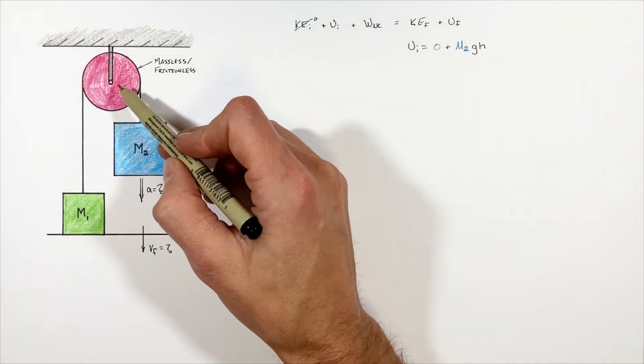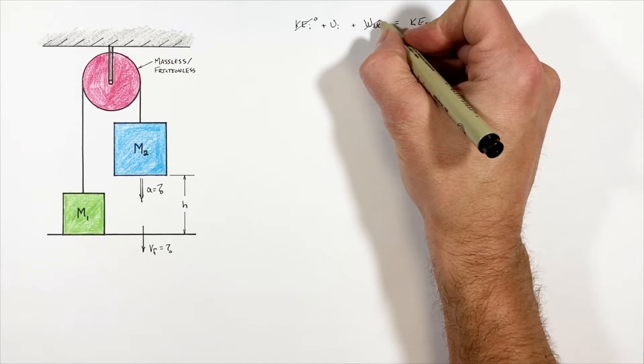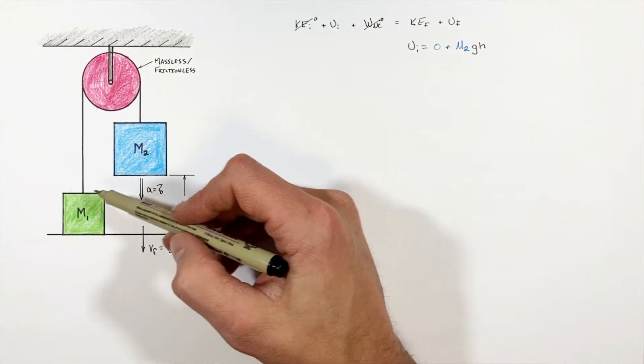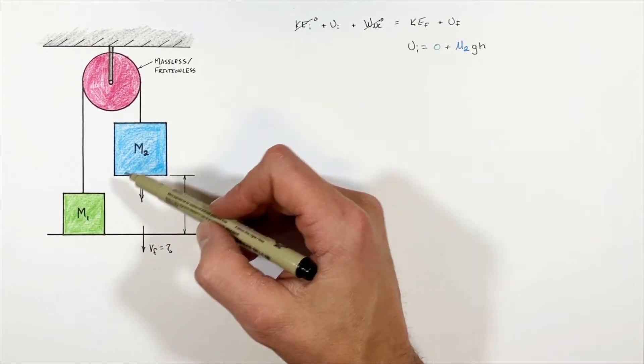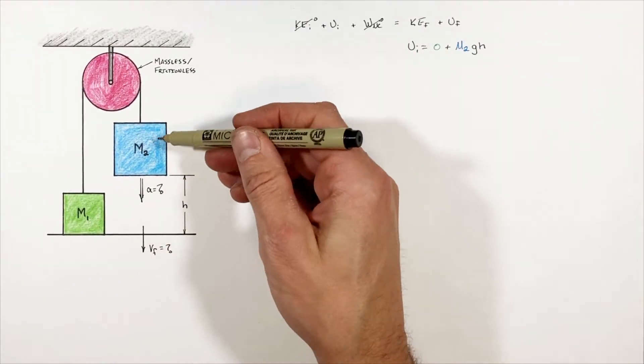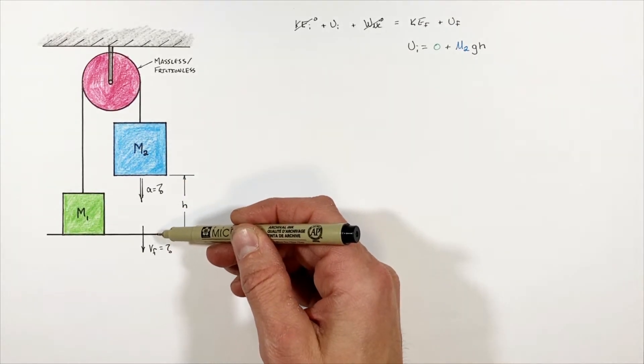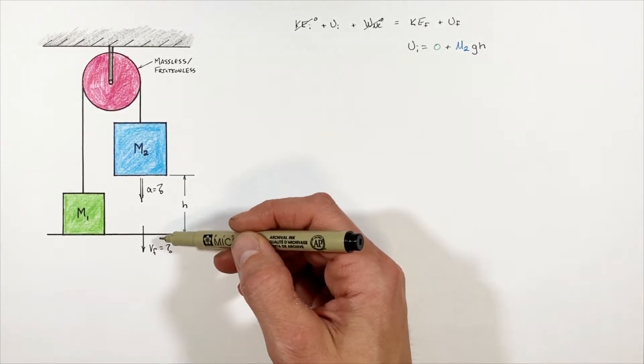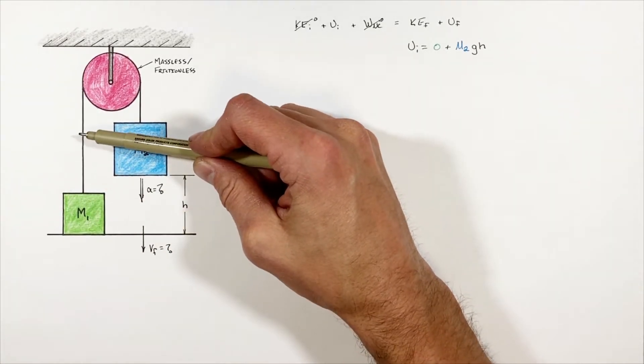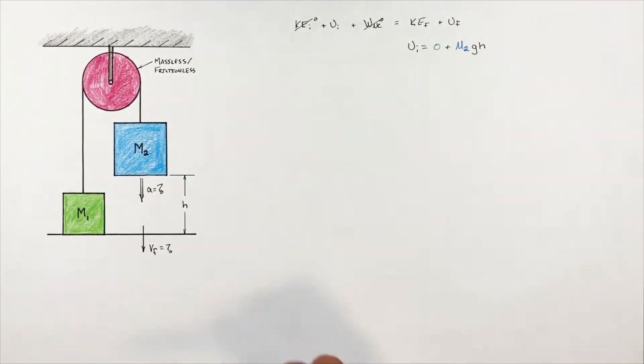Now because this pulley is both massless and frictionless, there's going to be no non-conservative work in this problem. That is to say friction is going to do no work or we have no outside energies contributing to the system. Now there will in fact be some final kinetic. We know as this block moves downward, it's going to develop some kinetic energy because it's going to be moving. And much in the same way as this block is moving down, this other block is going to move up.